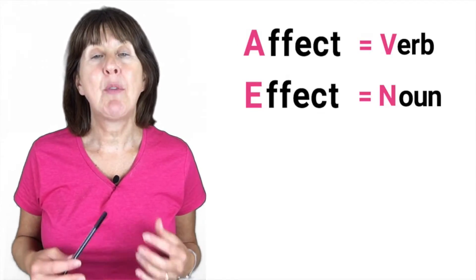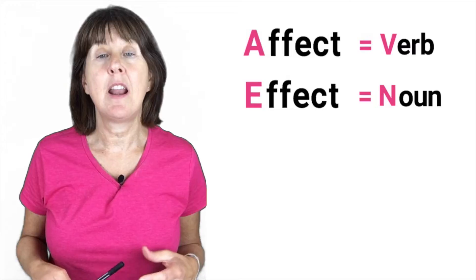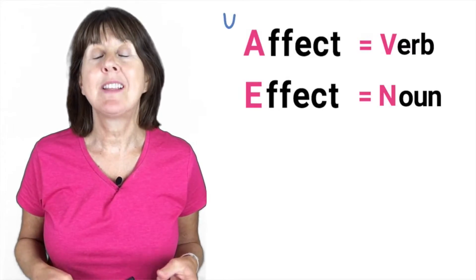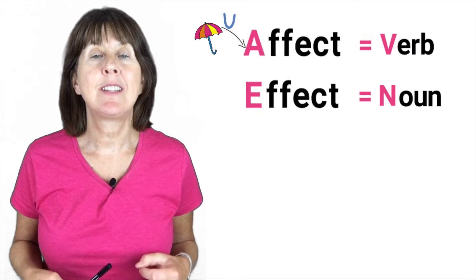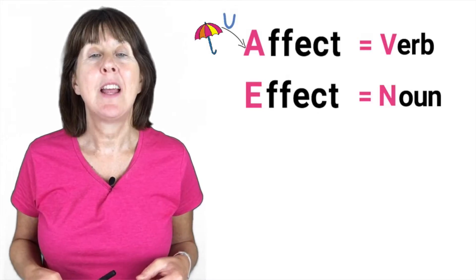Affect with an A is pronounced as if it's an uh like an umbrella whereas effect is pronounced with an I sound like eat.